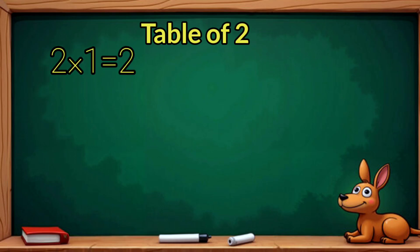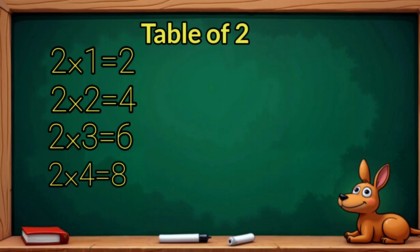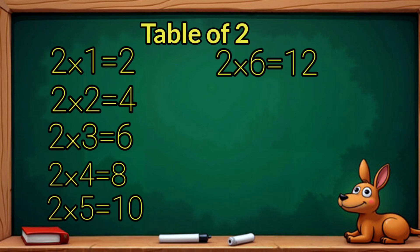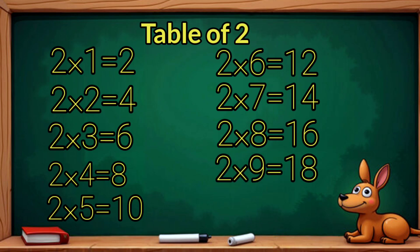2 1s are 2, 2 2s are 4, 2 3s are 6, 2 4s are 8, 2 5s are 10, 2 6s are 12, 2 7s are 14, 2 8s are 16, 2 9s are 18, 2 10s are 12.